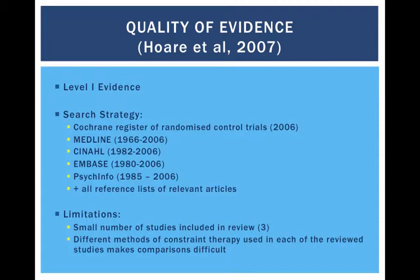The search strategy the authors used was good — they searched high-quality databases; however, some more specific databases, such as occupational therapy or physical therapy databases, may have returned more results. When first reading this paper, I noted that the eligibility criteria was quite broad; however, I can now see that this was needed due to the little evidence available, with the search only returning three eligible papers anyway. One limitation of this review is that each of the three papers included used a slightly different method of constraint-induced movement therapy, making direct comparisons difficult. Overall, this is a high-quality systematic review of the available literature, the main limitation being that there is not much available literature to review.